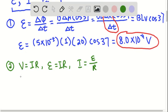Now I'm just going to plug in the value I found for EMF, which is 8.0 times 10 to the negative 4 volts, divided by 2, which is the value for resistance. And I have 4.0 times 10 to the negative 4th amps.